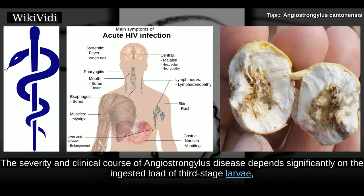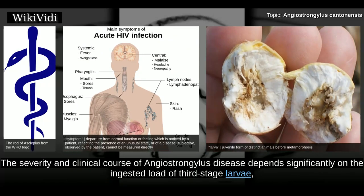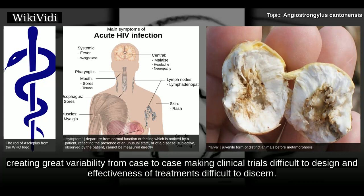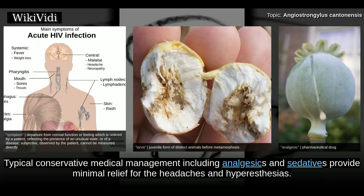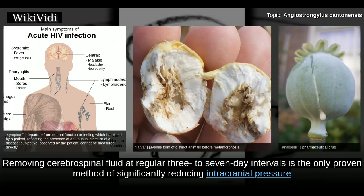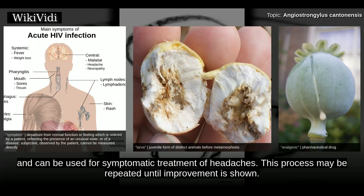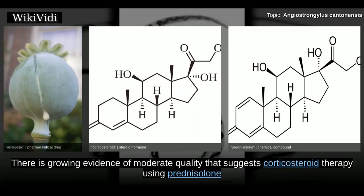Treatment. The severity and clinical course of Angiostrongylus disease depends significantly on the ingested load of third-stage larvae, creating great variability from case to case, making clinical trials difficult to design and effectiveness of treatments difficult to discern. Typical conservative medical management including analgesics and sedatives provides minimal relief for headaches and hyperesthesias. Removing cerebrospinal fluid at regular 3 to 7 day intervals is the only proven method of significantly reducing intracranial pressure, and can be used for symptomatic treatment of headaches.